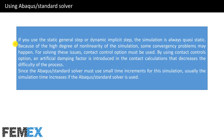If you use the static general step or dynamic implicit step, the simulation is always quasi-static. Because of the high degree of nonlinearity, some convergence problems may happen. For solving these issues, the contact controls option must be used. By using the contact controls option, an artificial damping factor is introduced in the contact calculation that decreases the difficulty of the process. Since the Abaqus Standard solver must use small time increments for this simulation, the simulation time usually increases. As you know, the Abaqus Explicit solver can solve the most sophisticated contact states. Now I want to show you the definition of the contact controls option.